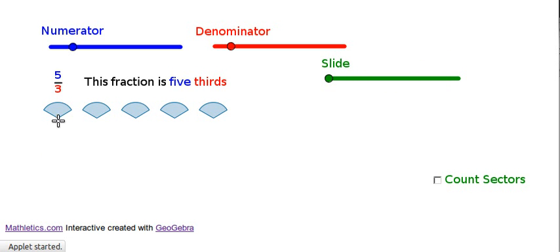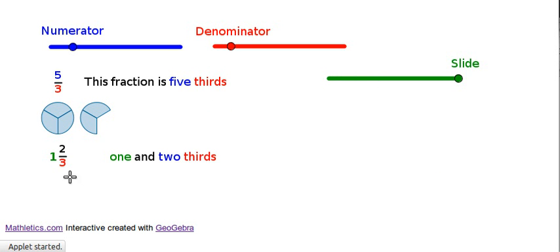So here they are as 5 individual thirds, and here they are as 1 and 2 thirds. They're both numbers, they both appear on the number line, they both mean the same thing, but they're just different ways of looking at them.